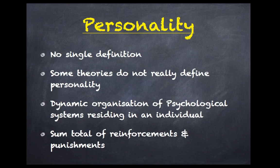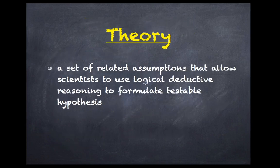Some theories do not really define personality. In fact, Freud's psychoanalysis is an example of such a theory. But there are books which attempted to come up with a definition. Personality is defined as the dynamic organization of psychological systems residing in an individual. Another text said it is a sum total of reinforcements and punishments. Feist and Feist's definition states that personality is a pattern of relatively permanent traits and unique characteristics that give both consistency and individuality to a person's behavior.